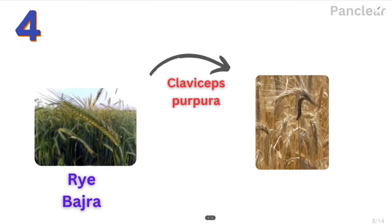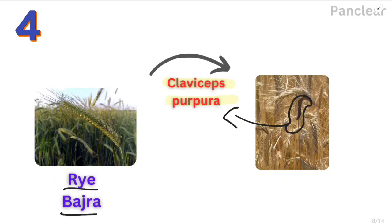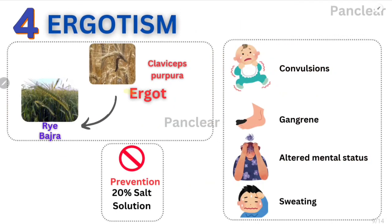The fourth disease is ergotism. This is related to rye and bajra contaminated with the fungus Claviceps purpurea. As you can see in the picture, there is a black color — that is nothing but this fungus Claviceps purpurea in another form. When we consume it, obviously it is toxic. It has ergot alkaloids, and it causes ergotism — leading to convulsions, seizures, gangrene due to arterial compromise, altered mental status, and profuse sweating.